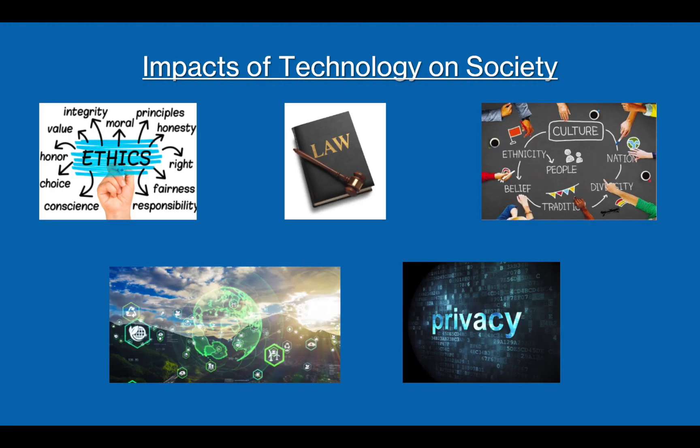First let's look at the different types of impacts that technology can have on society. These can be ethical issues, legal issues, cultural issues, issues to do with the environment, and issues to do with privacy.